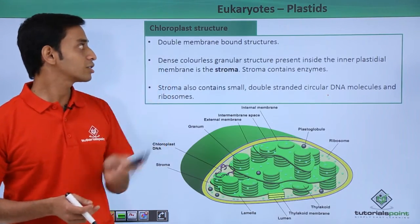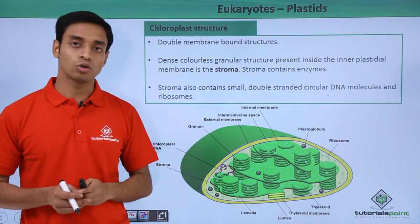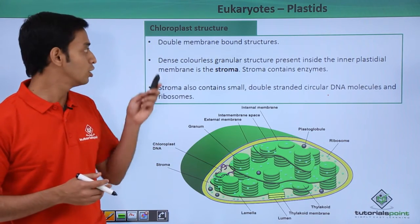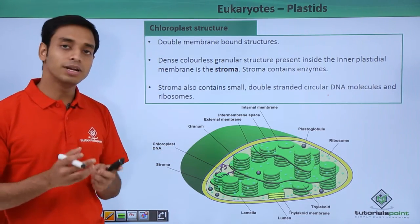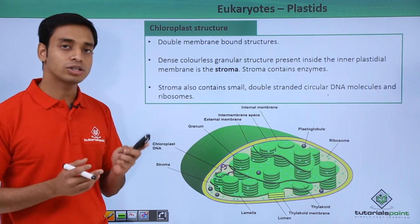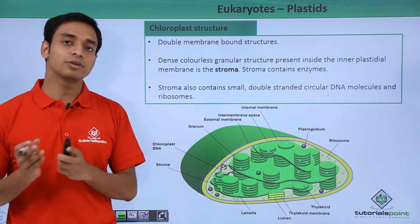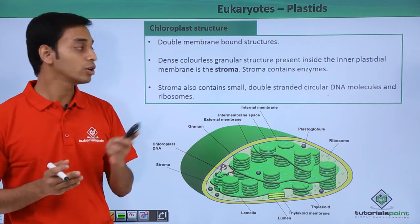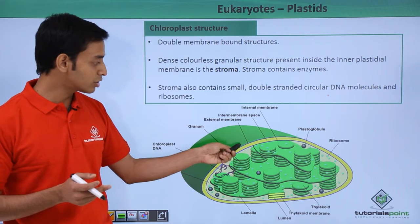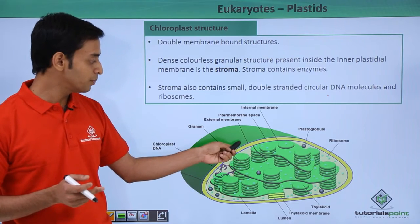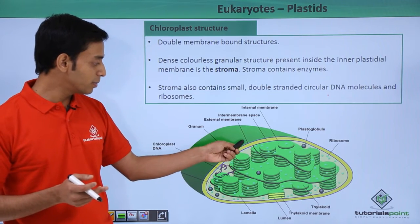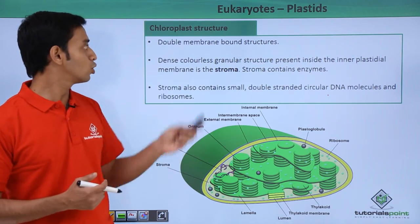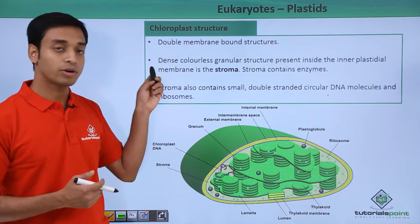Now let us look at the structure of the chloroplast. These are double membrane-bound structures, like that of the mitochondria. As you can see here, this is the inner membrane and this is the outer membrane of the chloroplast.